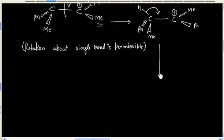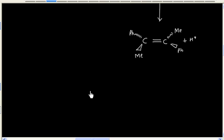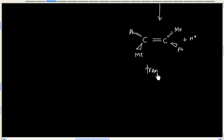Now in the next step, we can lose H plus and we will have a double bond. And this time we are getting trans alkene.